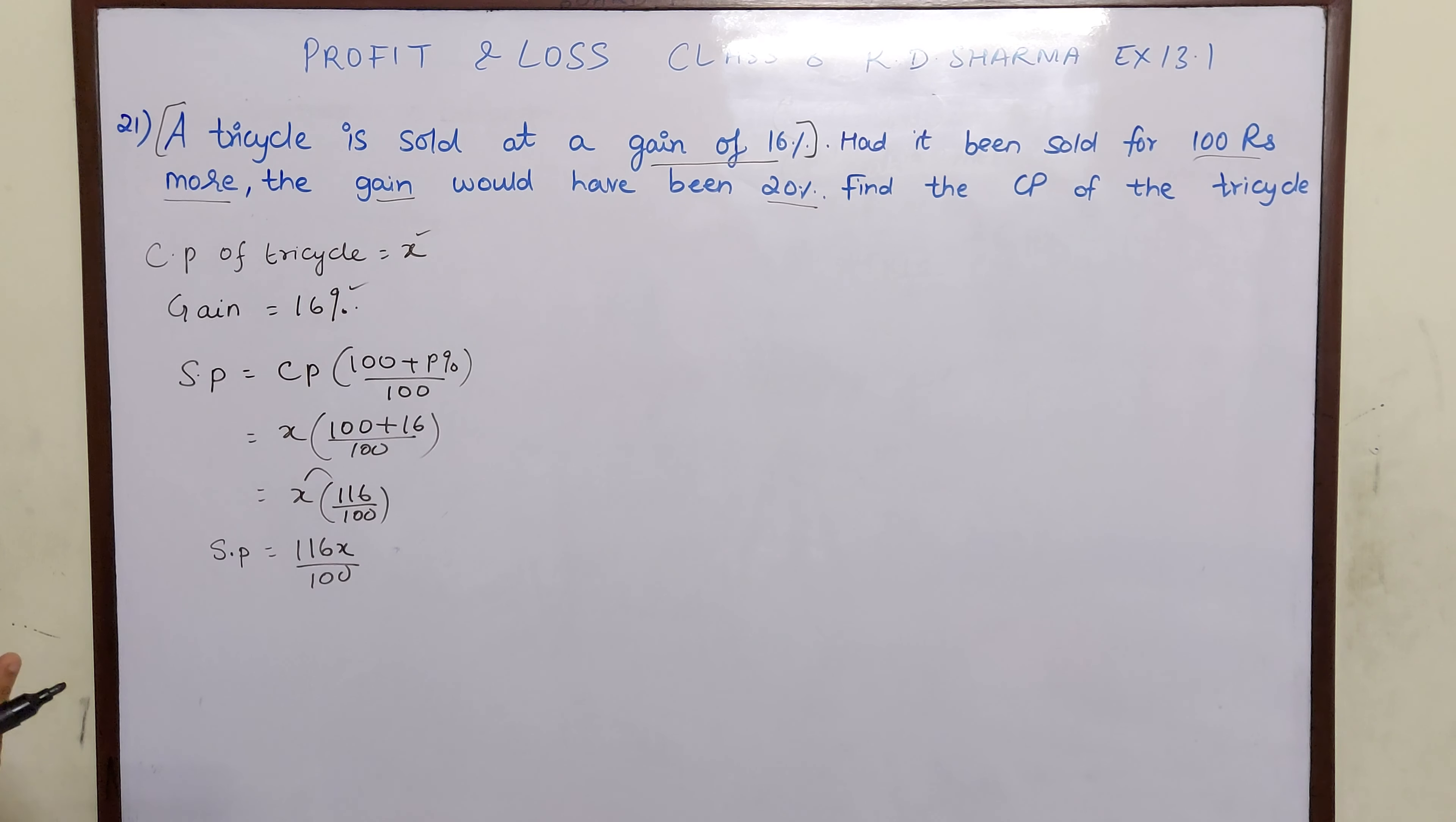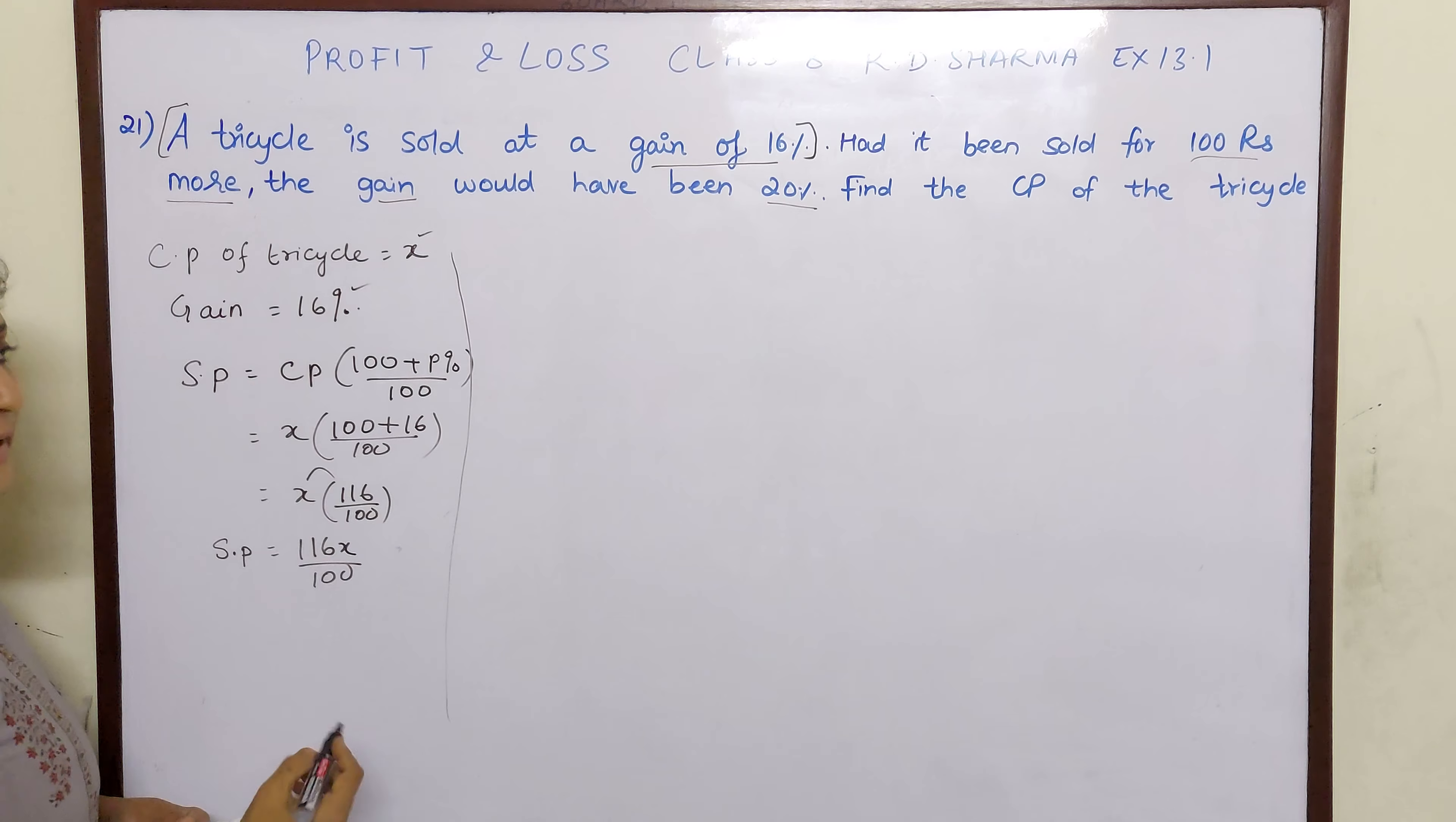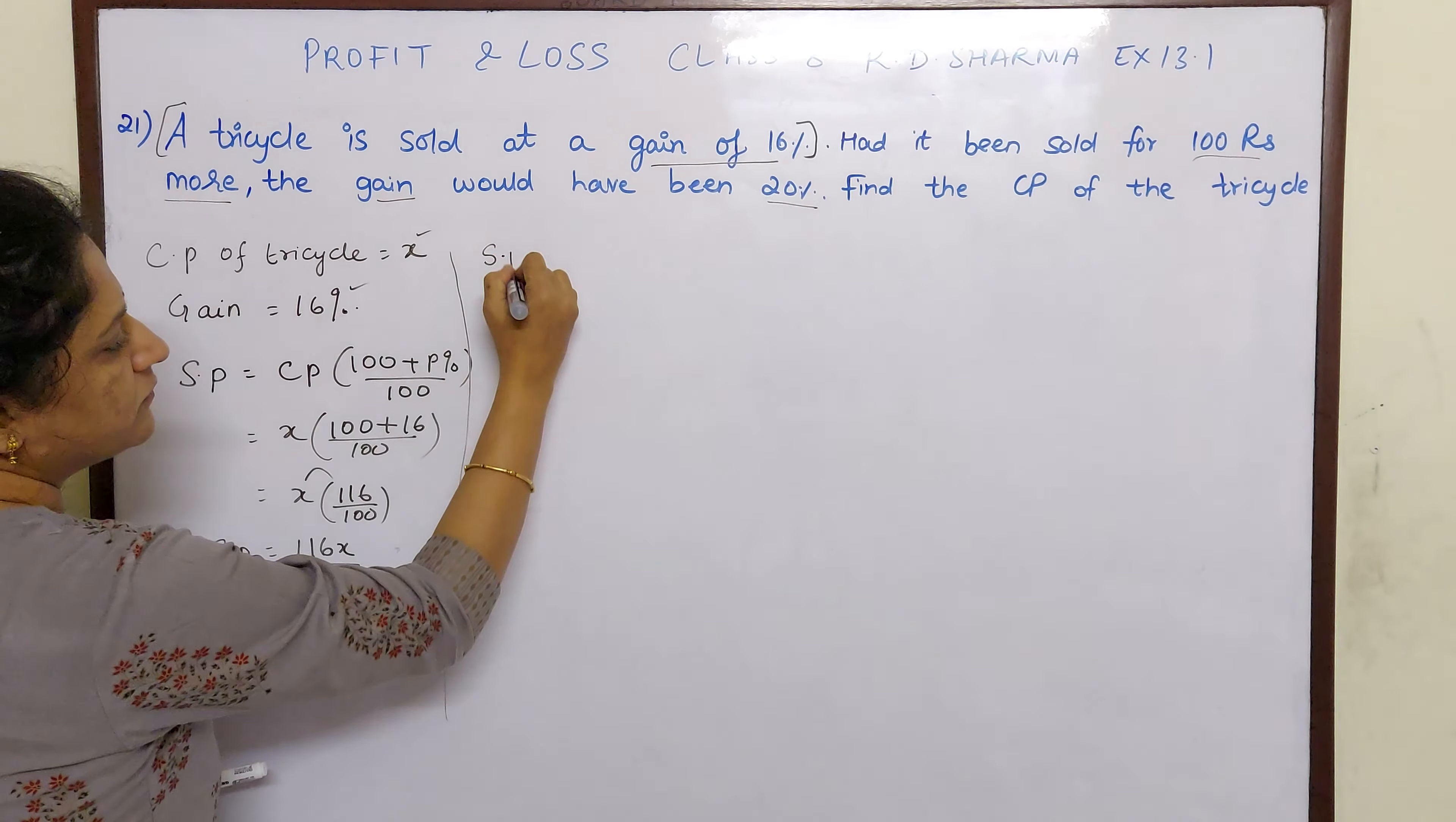Had it been sold for 100 rupees more. So now the condition is coming into play. Had it been sold. What have been sold? Tricycle. Sold means selling price for 100 rupees more. So we will add 100 to this. So that will be our first equation.